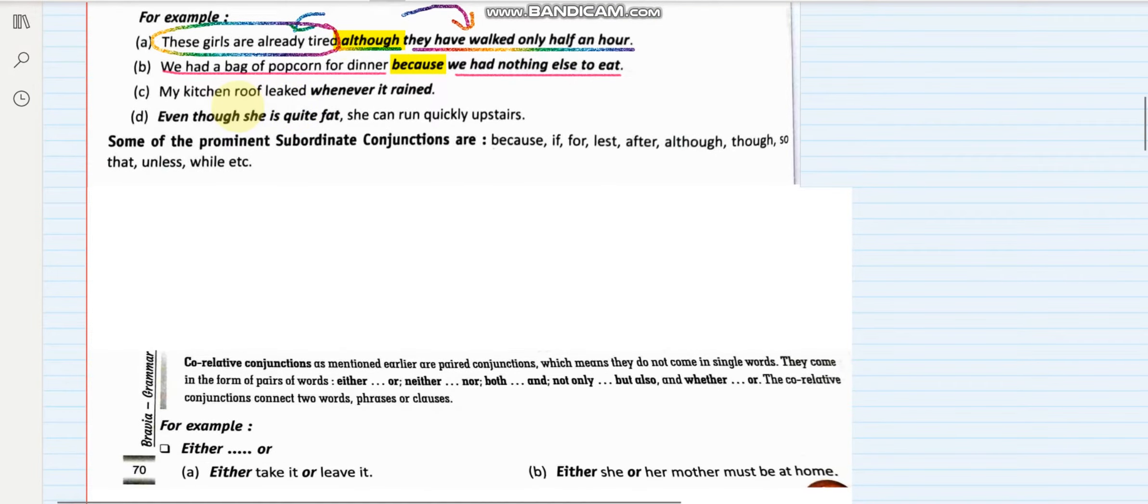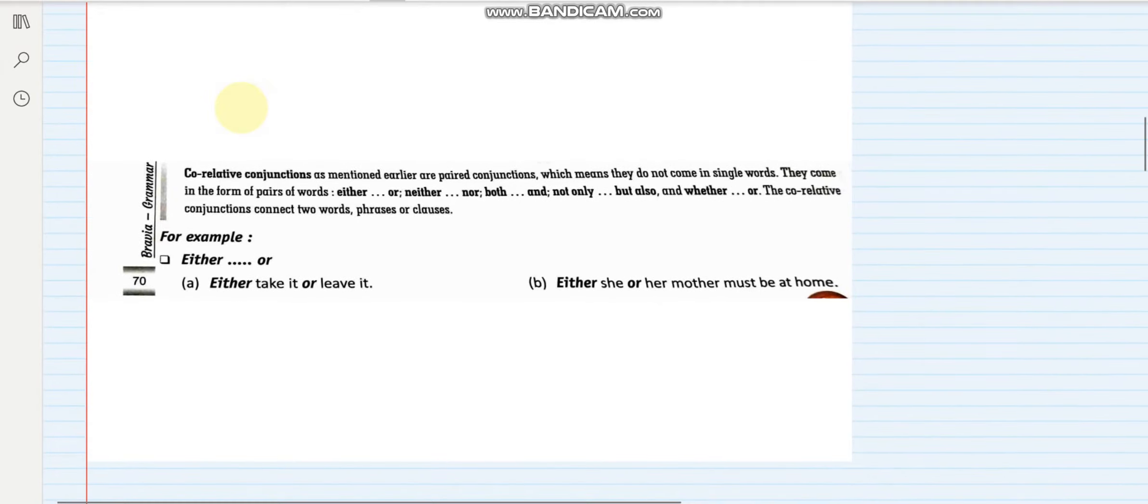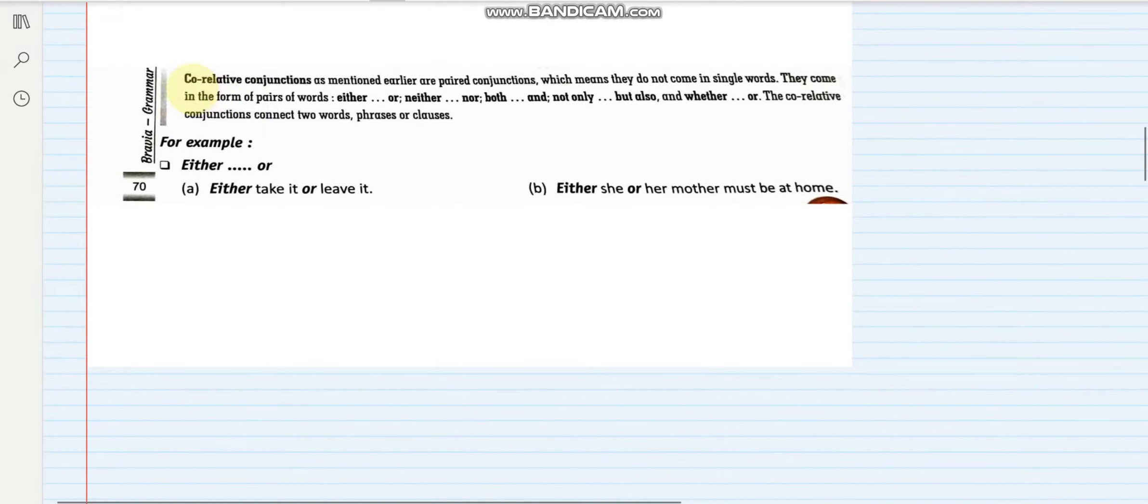So these are subordinate conjunctions. Next we talk about correlative conjunctions, the third one.